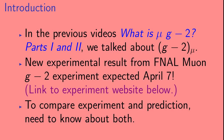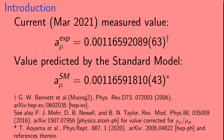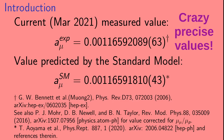You can find a link to that experiment's website in the description below. We're going to learn about the new experimental result, but in order to compare experiment and prediction, we need to understand both of them. So here we give the current, as of March 2021, experimentally measured value of the anomalous magnetic moment of the muon, and the value predicted by the standard model. The first thing to notice about these numbers is that they are crazy precise — in both cases, the error bar is in the last two digits of the value given.